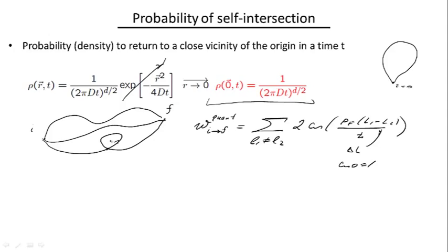But this guy tells us the probability density to return to an original point in a particular time t, while what we're interested in is any self-intersection. It doesn't have to occur necessarily in this particular time t, it has to occur at some point. So in order to calculate the total probability which I will denote as p subtotal, I have to integrate this expression over time from some minimal t to some maximal t.